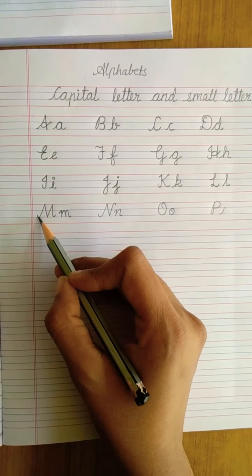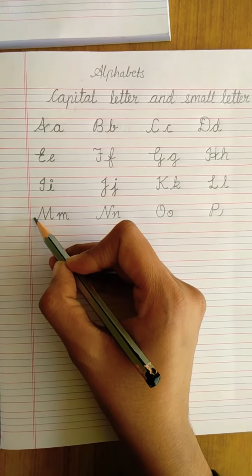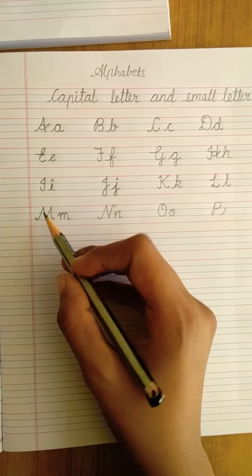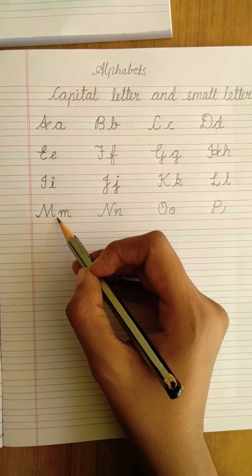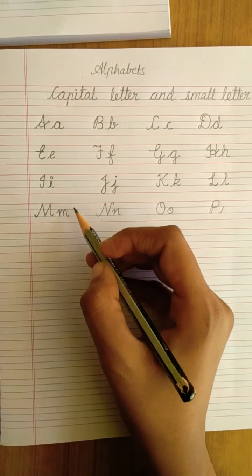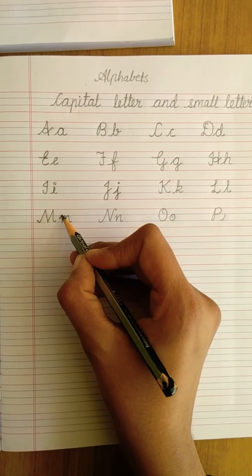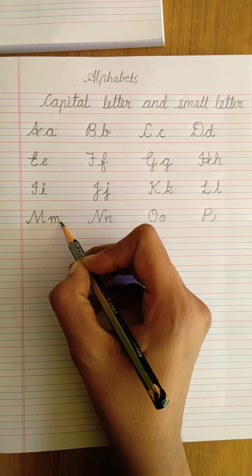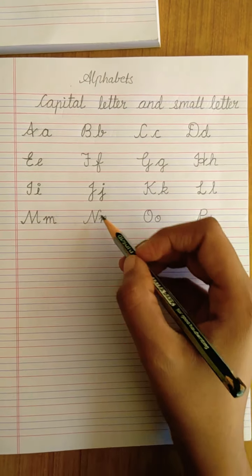Just have a look how to write M. Keep your pencil on the second blue line. Go up, down, again up and down. It's letter M. In the same way, you will be writing small letter M. Take a slanting line, come down, then get a curve, up, come down again. M.